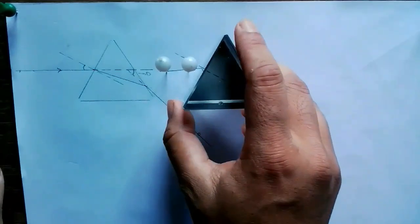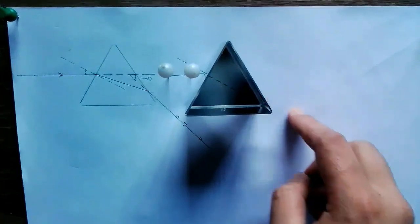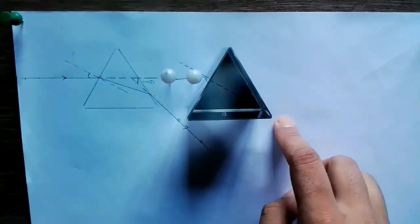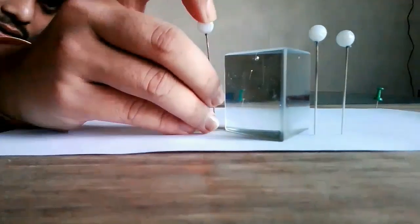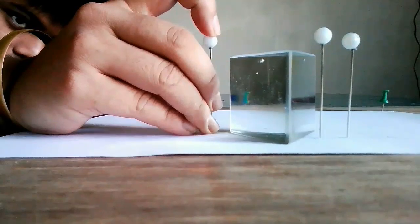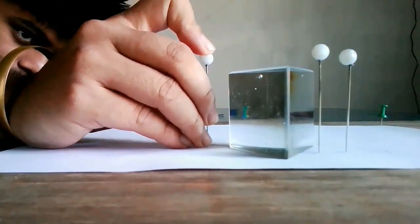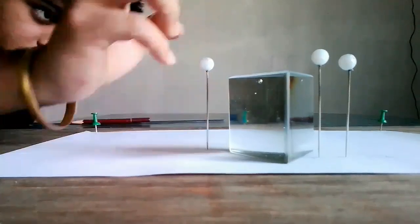Now follow the second reading where the incident angle is 35 degrees. Take the second reading, position the prism, and find the image of the first and second pin.